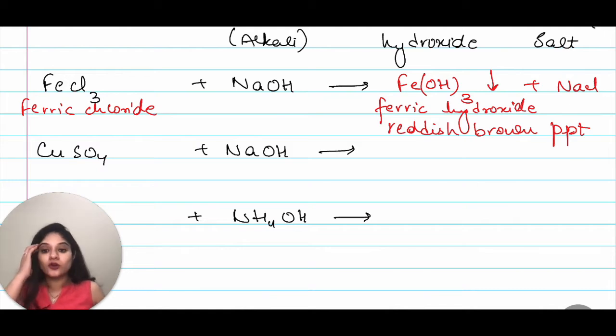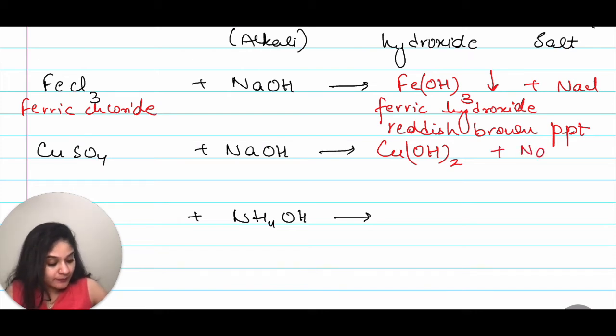Moving on to CuSO4, I have CuSO4 plus NaOH which will give me Cu(OH)2 and that is copper hydroxide plus Na2SO4 and this copper hydroxide is a pale blue precipitate.